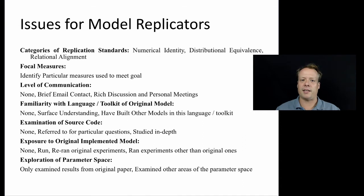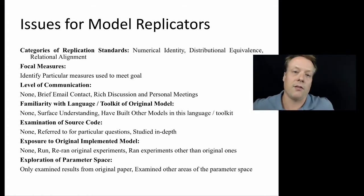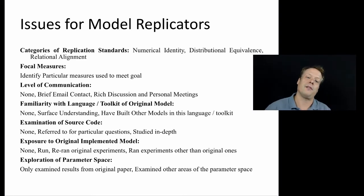Did the model replicator examine the original source code? If they did, that might indicate that their replication is slightly biased or influenced by some of those ideas. Did they actually have the ability to run the original model or were they just looking at the results? And how much did they explore the parameter space above and beyond what was presented in the original paper or model description?